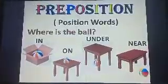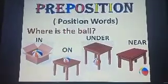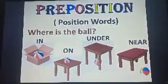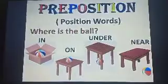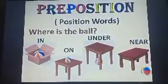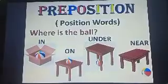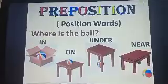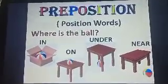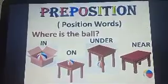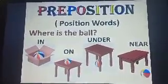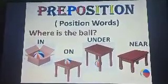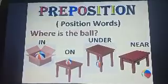Can you see these four pictures? You can see a common ball. The question is: where is the ball? In picture number one, if you notice, the ball is inside the box. If you see picture number two, the ball is on the table. In picture number three, the ball is under the table. And picture number four, the ball is near to the table.